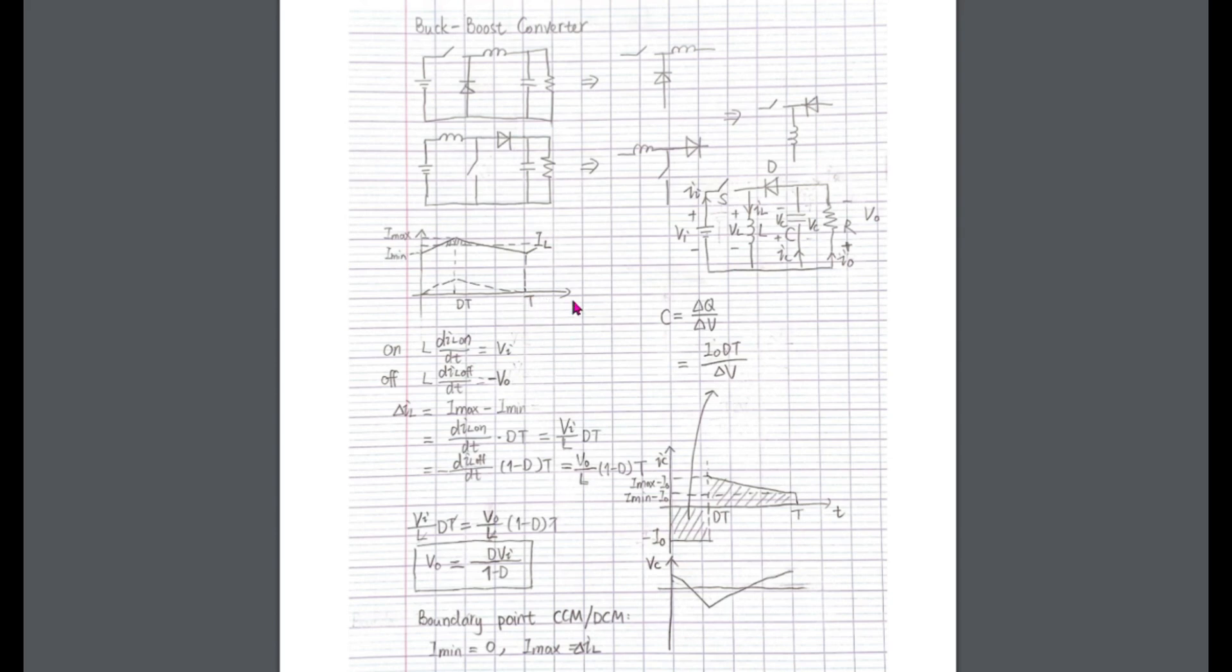In this way, the current through the inductor becomes discontinuous. Since this mode is discontinuous conduction mode, DCM, and the normal mode is continuous conduction mode, CCM.